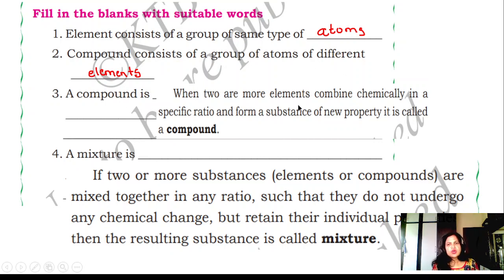A compound is when two or more elements combine chemically in a specific ratio and form a substance of new property, it is called a compound. Mixture: If two or more substances, elements or compounds, are mixed together in any ratio such that they do not undergo any chemical change but retain their individual properties, then the resulting substance is called mixture.